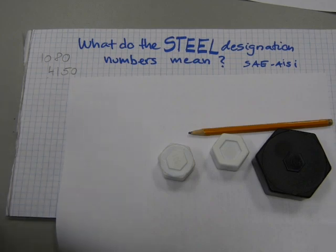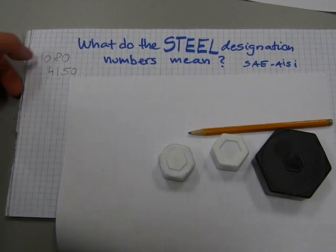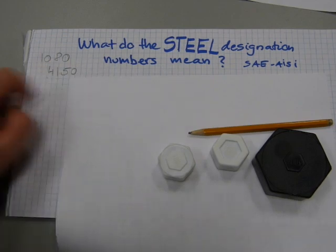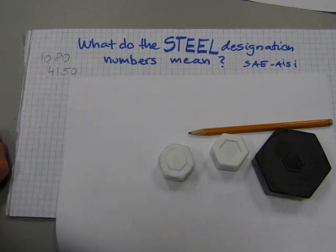In my previous video on steel types you have seen some of these numbers on the board with a couple of X's standing in place for some of the digits.